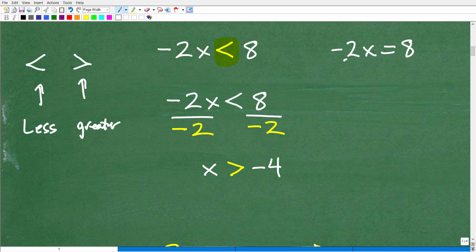So, if I was to solve for x here, I would divide both sides of the equation by negative 2. So, x would be equal to negative 4. Okay, so again, basic one-step algebraic equation.